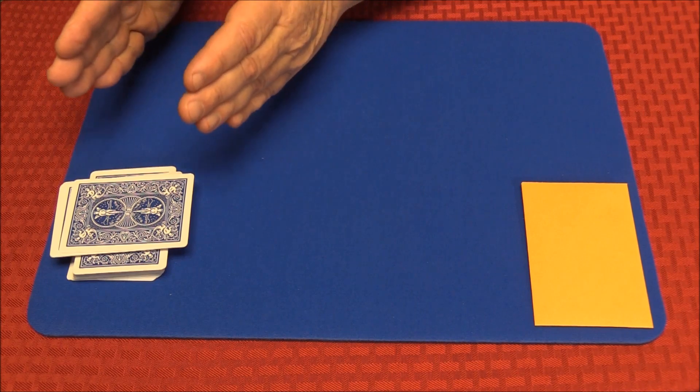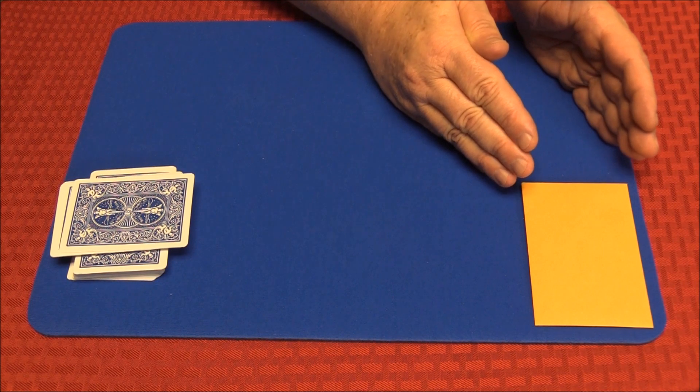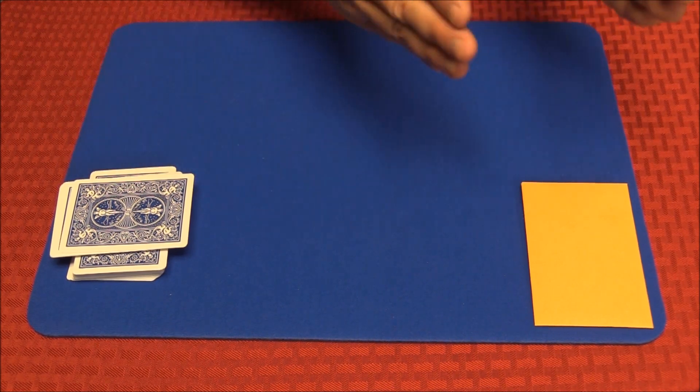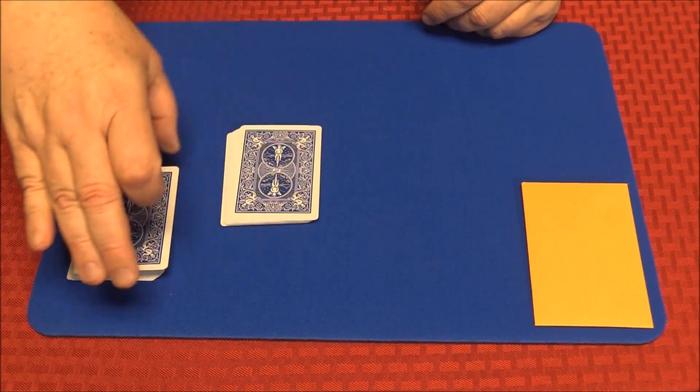So therefore, if we have a ten of hearts, we're gonna have a five of hearts. If we have eight of spades, we're gonna have a four of spades. So let's take a look and see what we cut to.